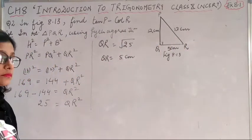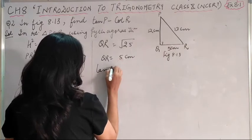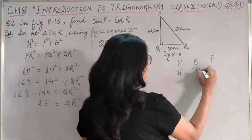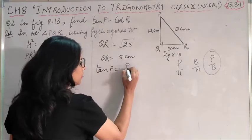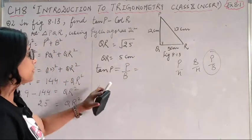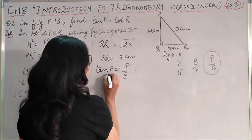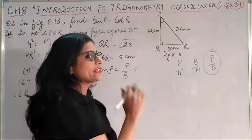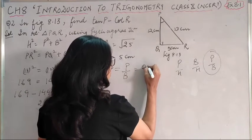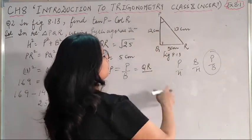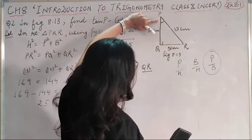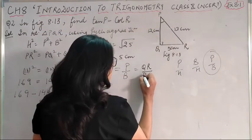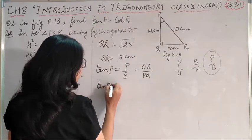Now I need tan P. First, recall the formula. The formula is tan equals perpendicular upon base. The angle is P. So perpendicular is the side in front of P, which is QR. And what is the base? You need to understand this: wherever it is 90 degrees and the angle is in one line, that is the base. So the base is PQ. Therefore, tan P equals QR upon PQ, which is 5 upon 12.